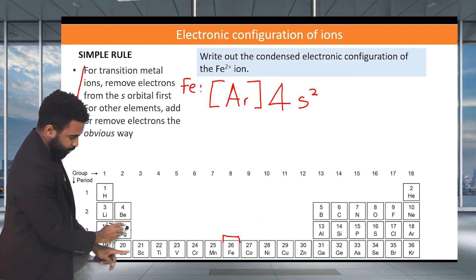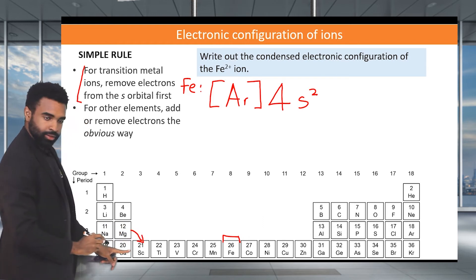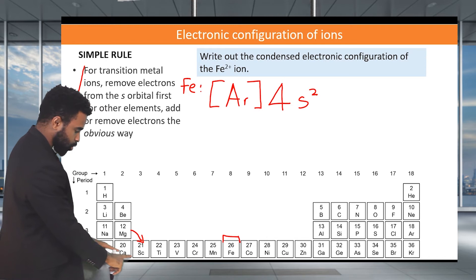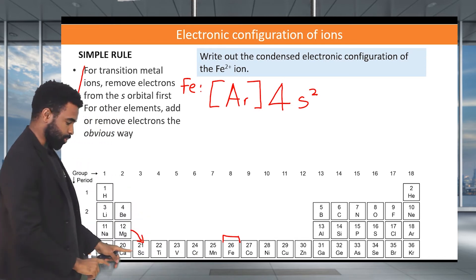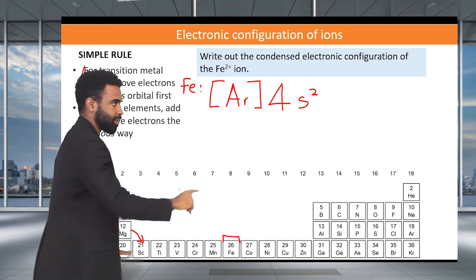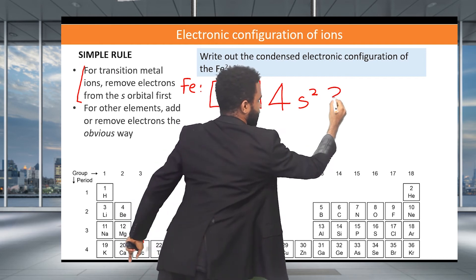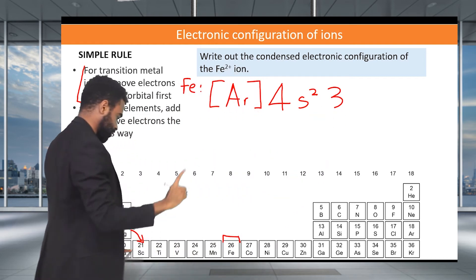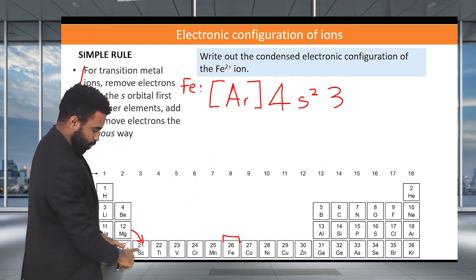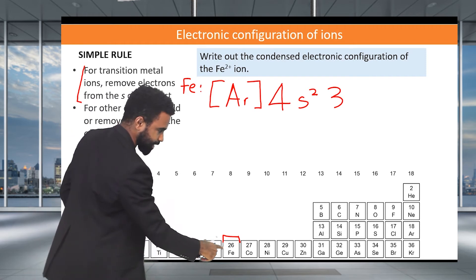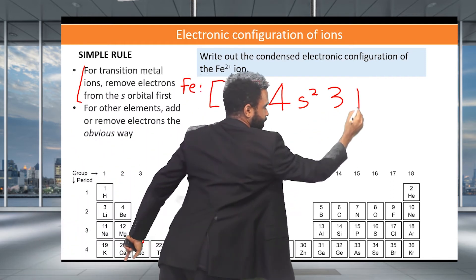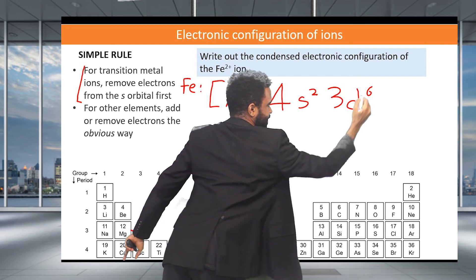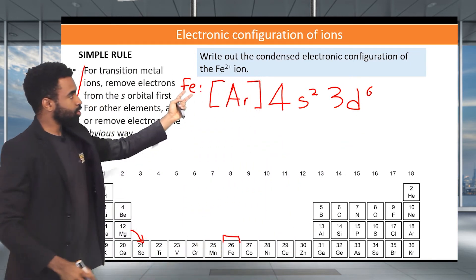And then here, remember always to fall down the stairs here. So we go from 4s to 3d, not to 4d like you might think. So 4s2 to what? 3d. And since we're doing iron, we have here 1, 2, 3, 4, 5, 6. Position 6 there, we have 3d6. And that would be now neutral iron.